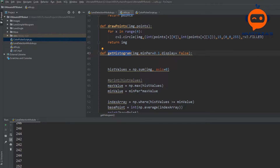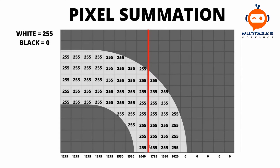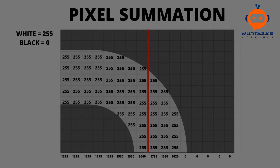Instead of getting the histogram of the complete image, we will get the histogram of the bottom part of our image. If we look at the bottom part, and we do the summation of only the first two rows, we can find that the base point of our image is somewhere there. If we sum only those first two rows and average the resulting columns, we get the center point of our path.